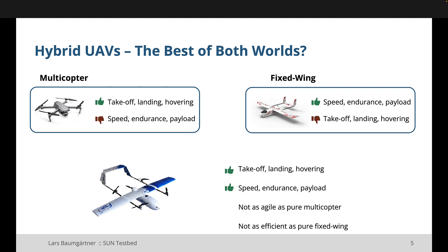The alternative are fixed wings. They offer high speed, can stay in the air much longer, can glide, and carry much larger payloads. But on the downside, they need more space to take off and land and cannot hover — they can only fly in circles. The mixture between both is a hybrid UAV, which we usually propose for such a scenario. They can take off, land, and hover like a multi-copter, but can switch to a fixed-wing mode with higher speeds, longer endurance, and larger payloads, though they're not as agile as a multi-copter or as efficient as a pure fixed wing.